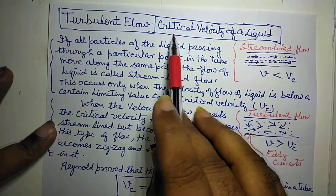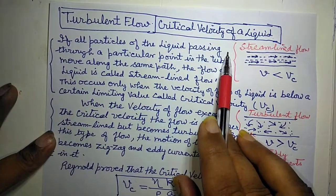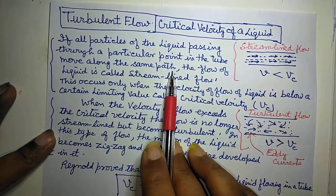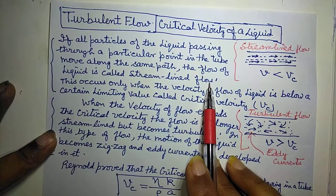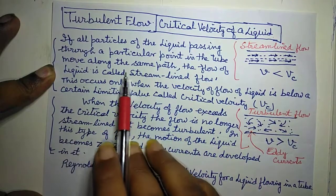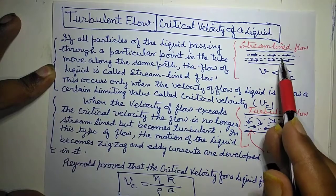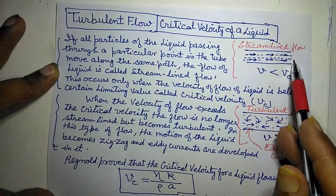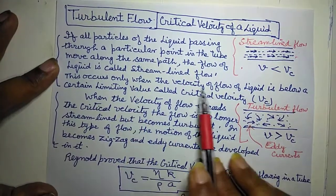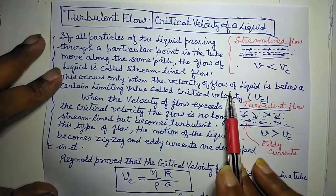Turbulent flow and critical velocity of a liquid. If all particles of the liquid passing through a particular point in the tube move along the same path, the flow of liquid is called streamlined flow. This occurs only when the velocity of flow of liquid is below a certain limiting value, called critical velocity.